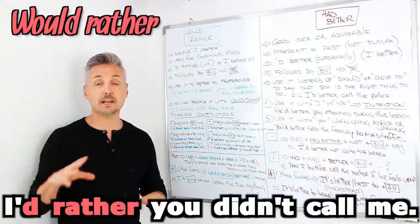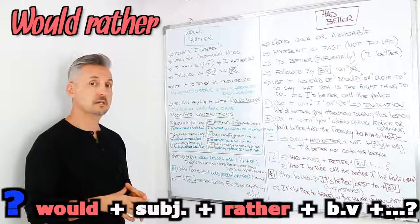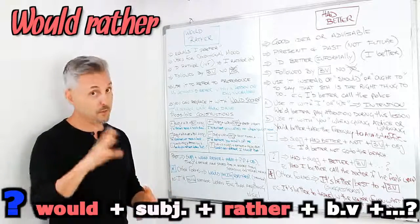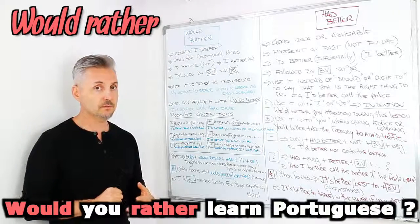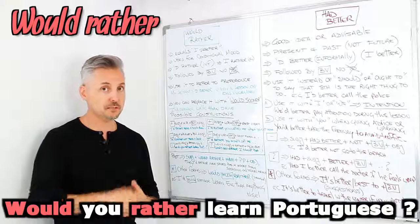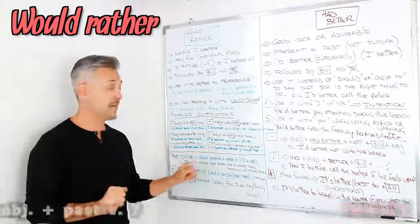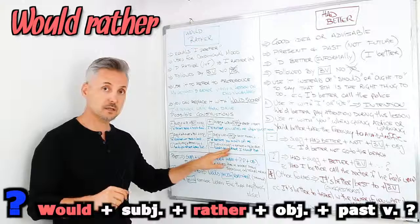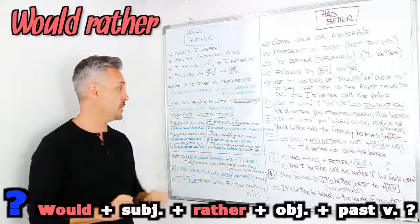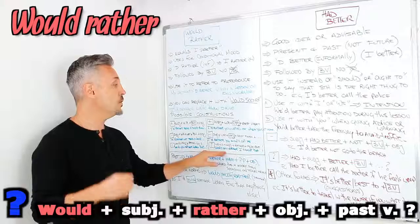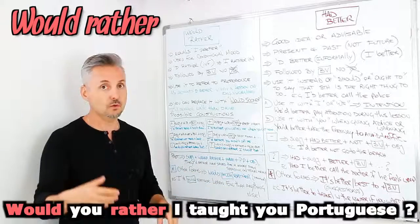For an interrogative sentence, we need: 'would' + subject + 'rather' + base of the verb without 'to' + the rest. For example: 'Would you rather learn Portuguese?' The other interrogative construction uses: 'would' + subject + 'rather' + object + past verb form. For example: 'Would you rather I taught you Portuguese?'